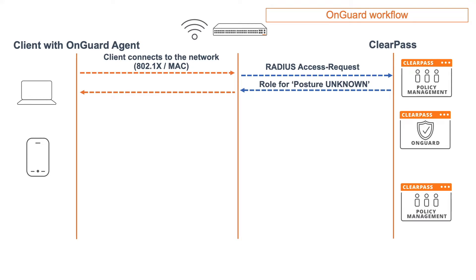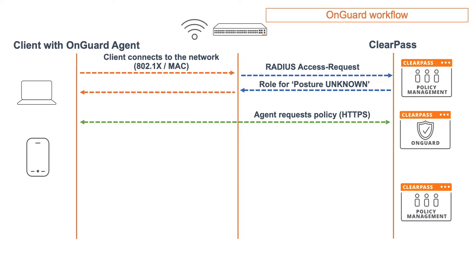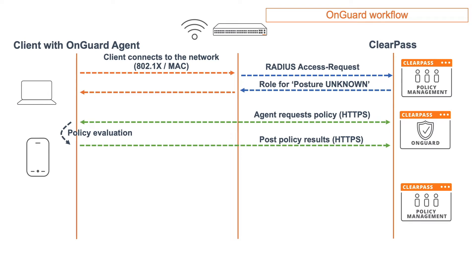So then you have immediately full access to the network, and if OnGuard later on reports that there is an issue, then you can put it on a limited access role. Or you can start with the limited role, and then as soon as you know that the posture is healthy, you can open up the access. But at least in either the limited role or the full access role, the agent needs to communicate to the ClearPass server, and there it can request the policy. Then it will do a local policy evaluation and check if the antivirus is running, if the firewall is okay, if processes are running or not running, and then it will respond to the ClearPass server with the policy results. At that point, ClearPass will do an evaluation, and then based on the results, ClearPass will assign a posture token.